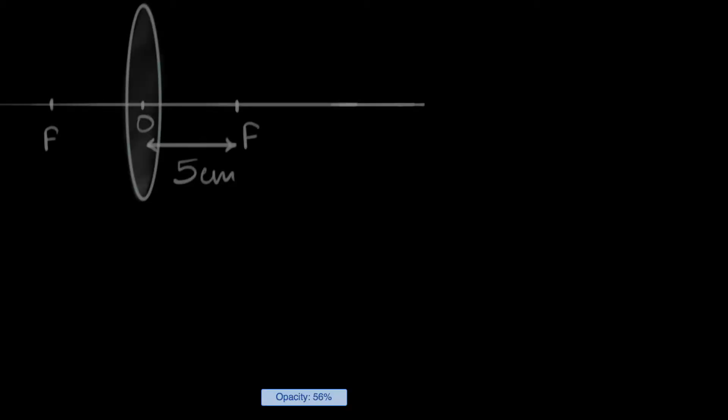Let's say we have a convex lens of focal length five centimeters, and we keep an object six centimeters in front of it. How would you find where its image is going to be formed?